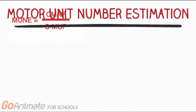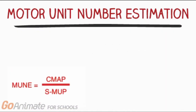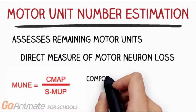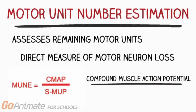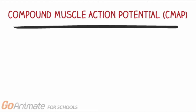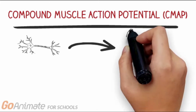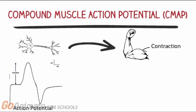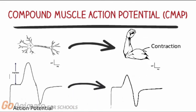The motor unit number estimation assesses remaining motor units and is a direct measure of motor neuron loss. It is based on a ratio of maximal compound muscle action potential — the sum of all motor units — divided by the average single motor unit potential. A compound muscle action potential is an electrophysiological measure generated by maximally stimulating a nerve and depolarizing all muscle fibers innervated by it. A reduction of CMAP amplitude reflects loss of motor axons and concomitant progression of ALS.